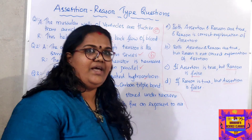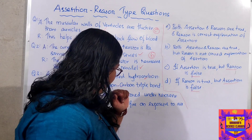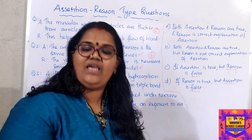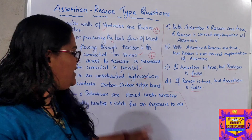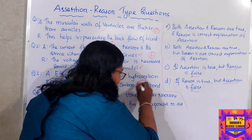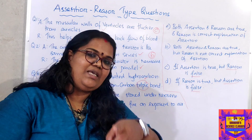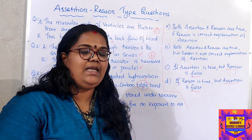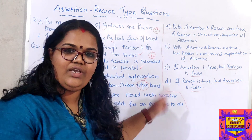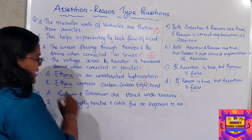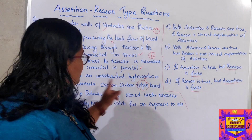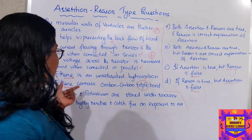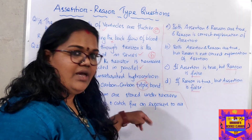Reason: ethene contains a carbon-carbon triple bond. Read carefully — triple bond. Many children make the mistake here; that's why I keep saying read the question properly. Ethene has a double bond, not a triple bond. CBSE has tricked us with this — 'ethene' with double bond is written, but the reason says triple bond. So ethene contains a carbon-carbon double bond — not triple bond. The reason given says triple bond, which is wrong.